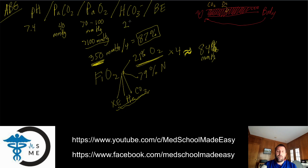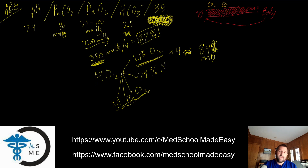Now we have bicarb. Standard bicarb in the blood serum is 24. Base excess — ideally zero, ranging from negative two to plus two. Base excess refers to your bicarbonate. If you draw a blood gas showing a bicarbonate of 28, your base excess would be plus four because you're four bicarbs over normal. As a trainee learning blood gases, I don't want to focus much on base excess because there are better tools to use when interpreting a blood gas.